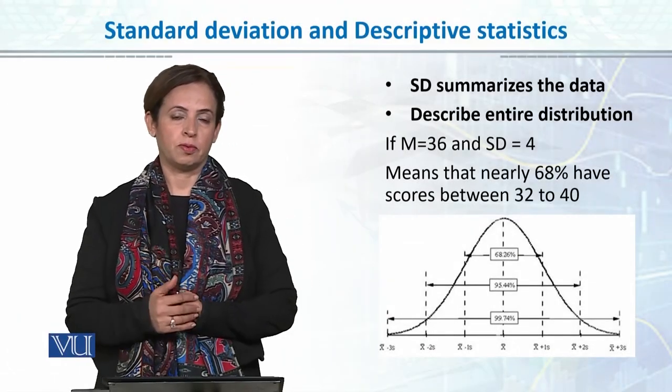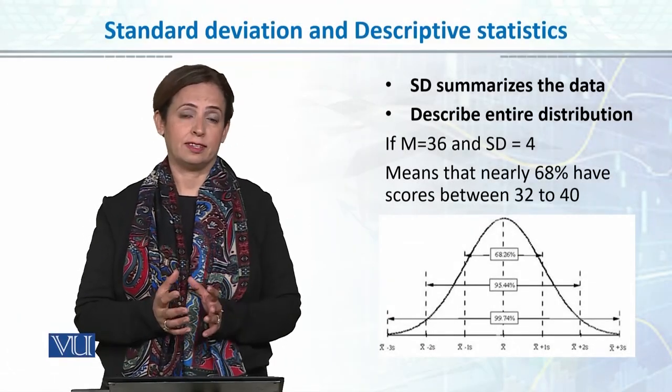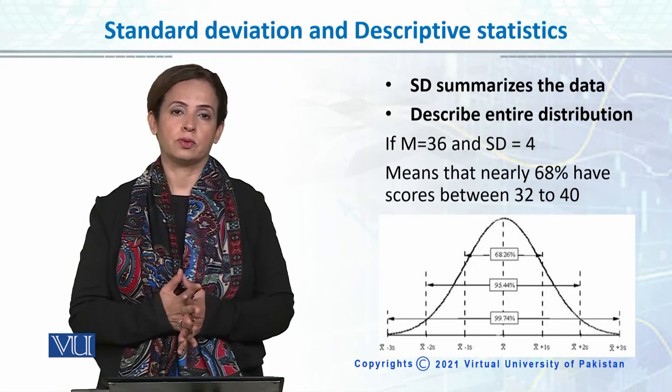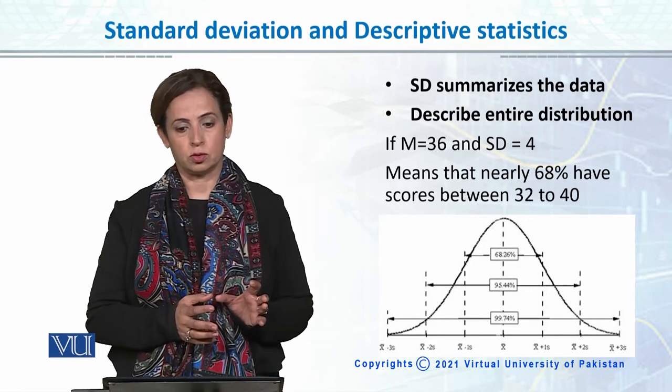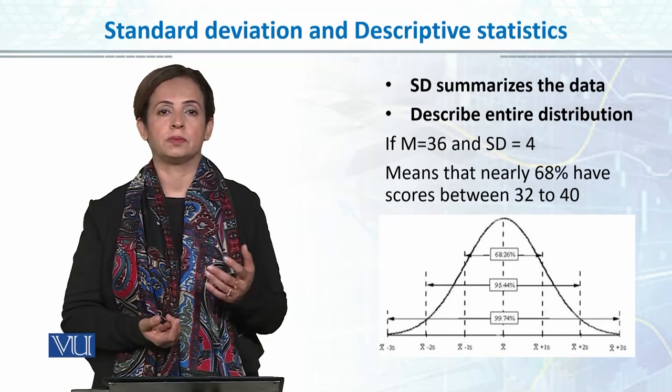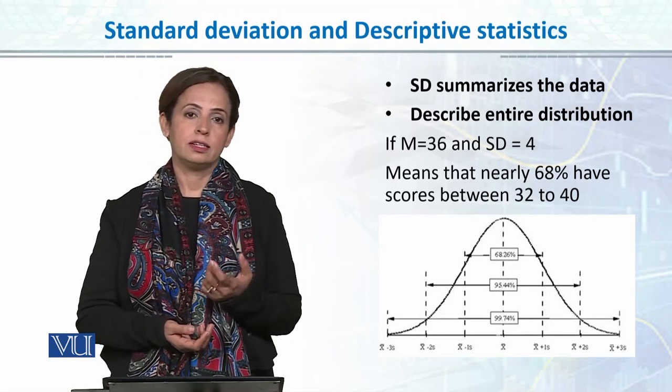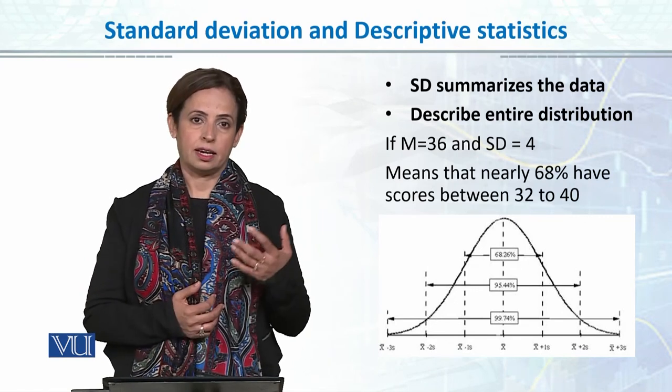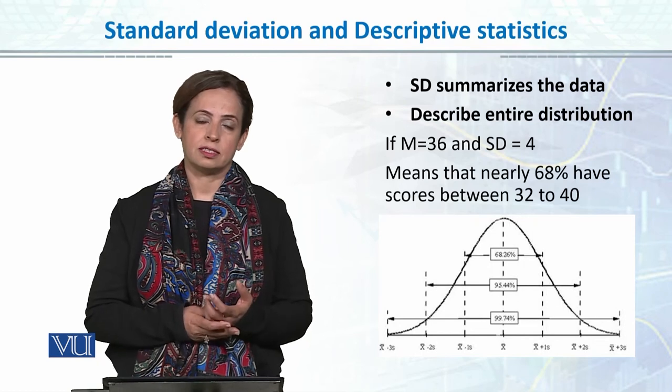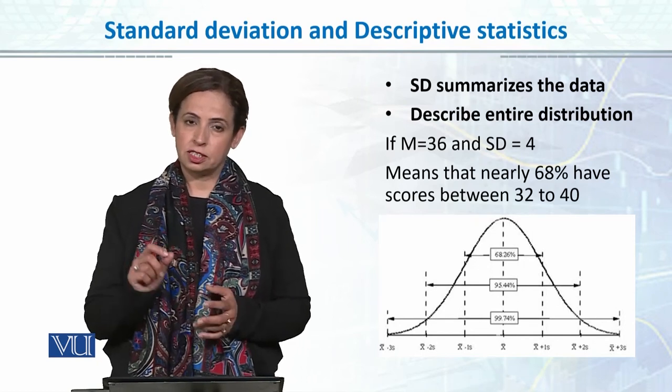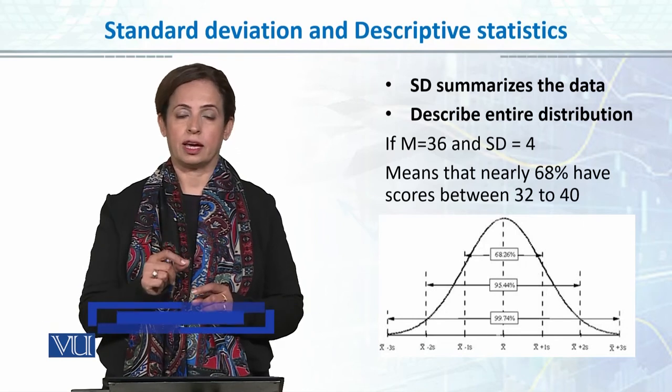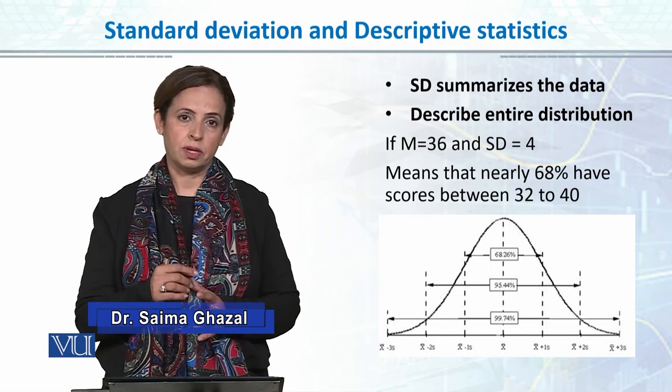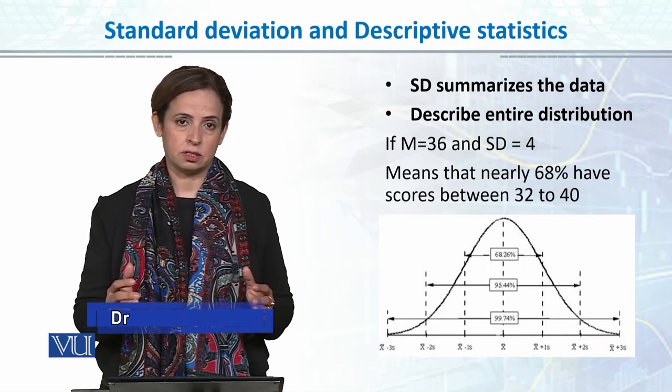What is the relationship between standard deviation, variance, and descriptive statistics? We talked about descriptive statistics - the major function is that it summarizes the data into one single value. When we report standard deviation or variance, it means we are summarizing the variability into one single value which tells us the dispersion in the data, the variability in the data. Actually, it not only summarizes the data but describes the entire distribution. How? Because standard deviation is basically a unit of measurement for the normal distribution.